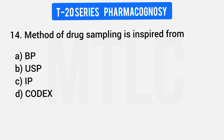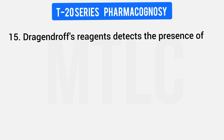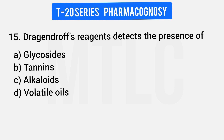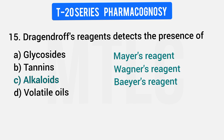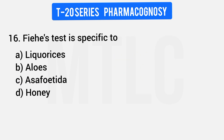Question 13: Method of drug sampling — 4 options. Question 14: In the US Pharmacopoeia, how many staggering chemicals could be identified? Question 15: Dragendorff reagent detects the presence of which secondary metabolites? Dragendorff, Mayer's, Wagner's, and Hayer's are all reagents used to detect alkaloids. Question 16: Fiehe's test is used for honey — it is a very easy but important question.